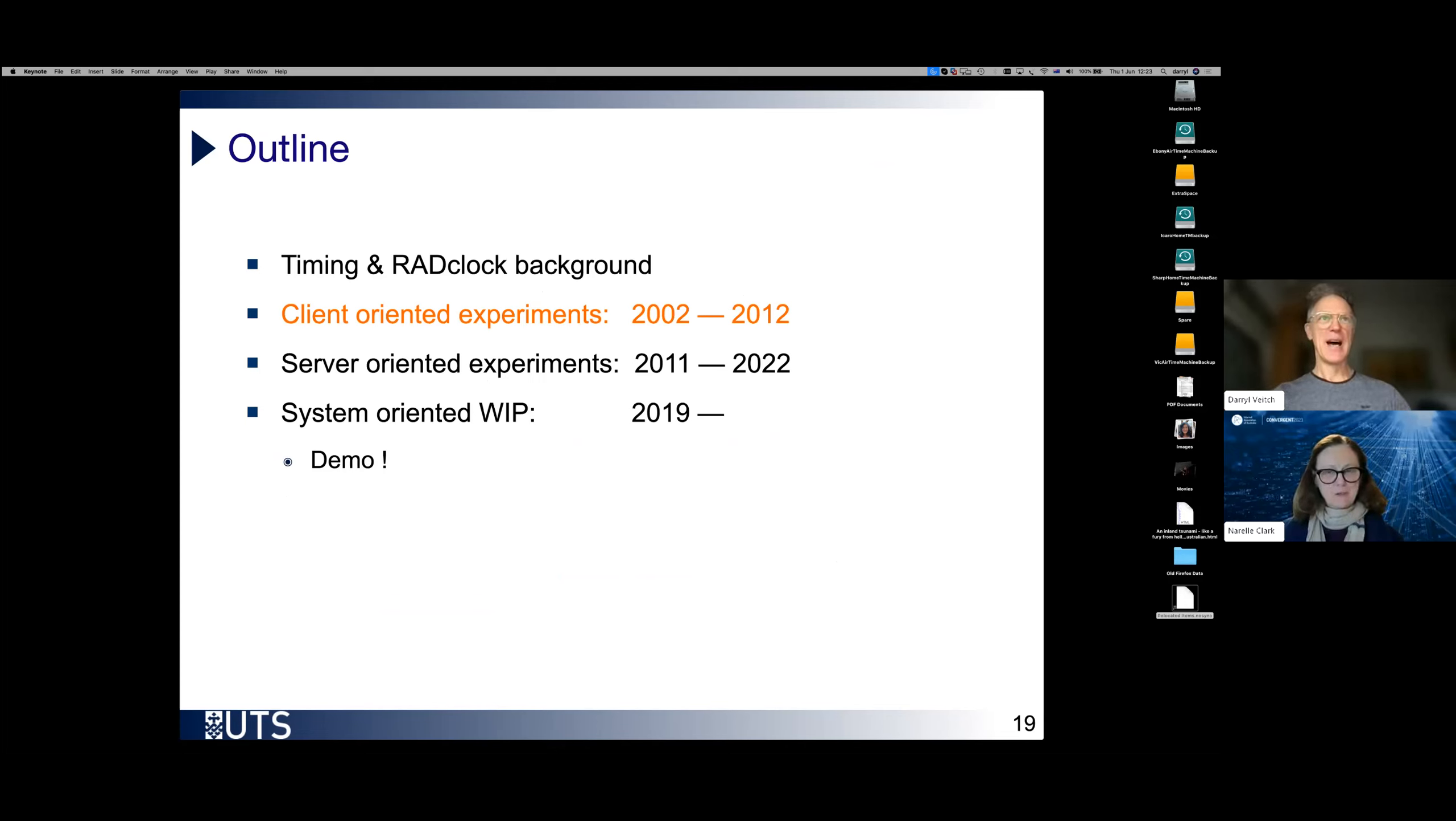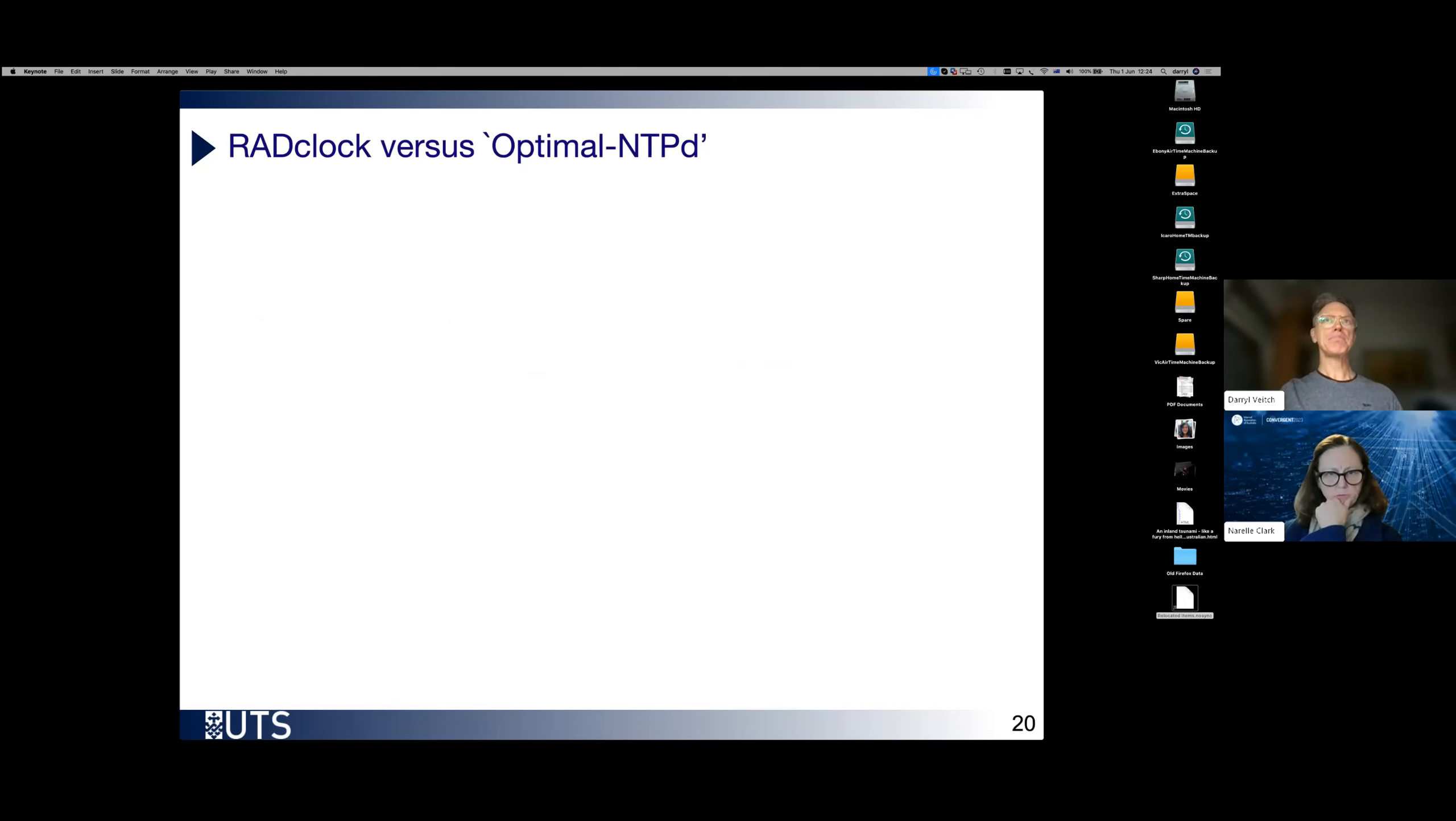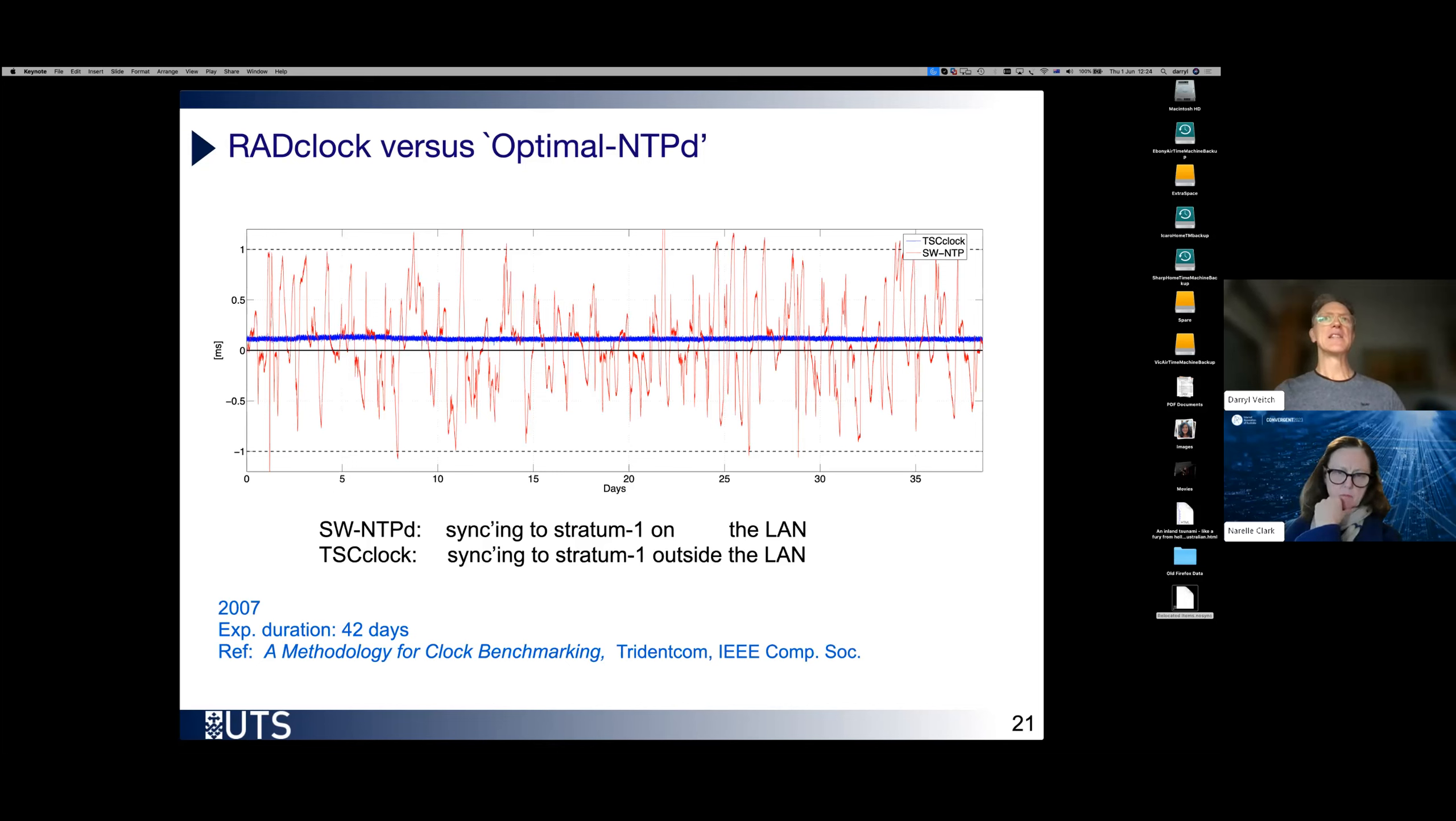So this first set of measurements are the first very long phase of this work. And we were really focused on proving that we really could do something so much better with RADclock. So these are measurements trying to prove up RADclock and compare it with NTPD. So these are measurements based in a single client connecting to a server across the network. And we almost always focus on a stratum one server across the network. Why? Because we wanted to do our comparisons in the client, but we didn't want to muddy the waters by also having a server that was doing strange things.